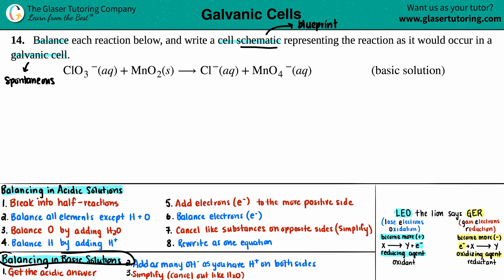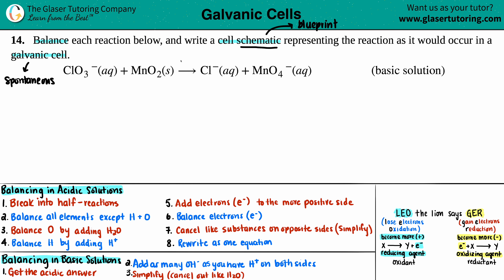The first step is to get the acidic answer, going through the eight steps for balancing in acidic solution. These eight steps should be set in stone — they could throw any reaction at you and if you have these steps down, you'll get it right. Step one: break the equation into two half-reactions. Pick substances that look similar — for example, ClO₃⁻ on the left pairs with Cl⁻ on the right because chlorine goes with chlorine.